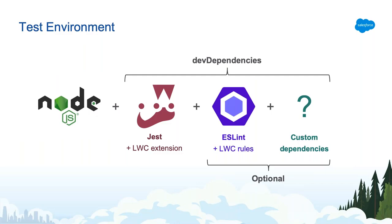Jest runs on Node.js. Even though our pages use JavaScript that runs natively in the browser, we need Node.js to run tests. Jest is listed as a dev dependency — needed only for build and test, not at runtime. I also recommend using ESLint alongside Jest; we've built extensions for both specifically for web components.